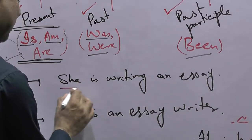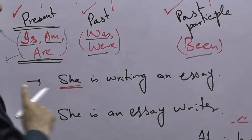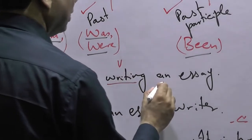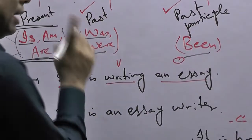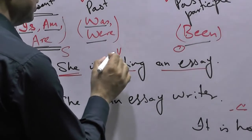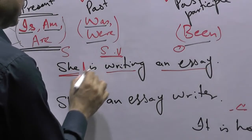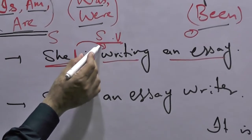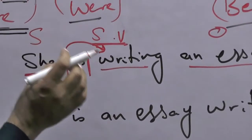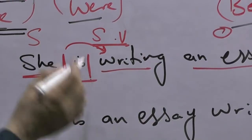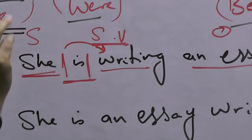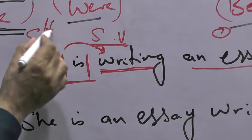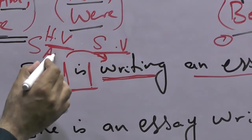Look at this sentence: 'She is writing an essay.' Here 'she' is the subject, 'writing' is the verb, and 'an essay' is the object. If we classify 'writing' further, it is a strong verb. Now what is the role of 'is' here? It is assisting the strong verb 'writing' — helping it. It has no separate meaning on its own; it is only helping the strong verb. So whatever is helping is called a helping verb or auxiliary verb. Here 'is' is functioning as a helping or auxiliary verb.